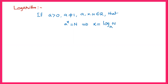So, a is positive and not equal to one. If a power x equals n, then x is the logarithm of n to the base a. For example, 2 power 3 — we know that it is 8. Now the same can be changed into logarithmic form: log 8 to the base 2 equals 3.